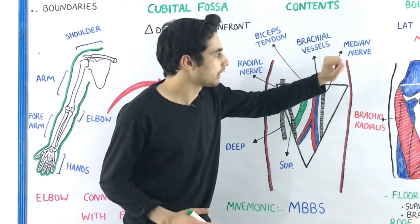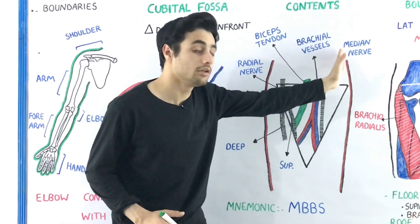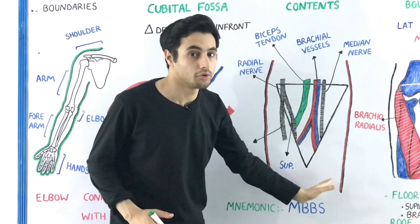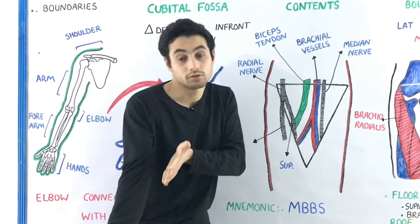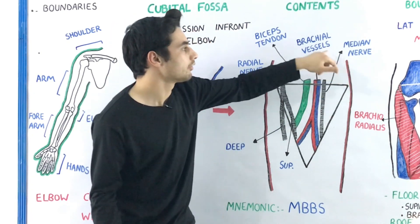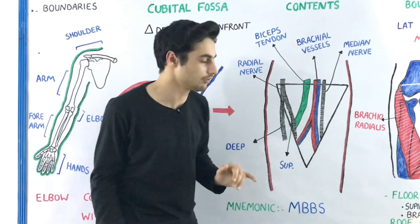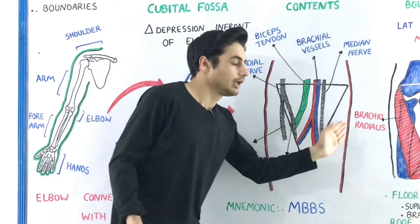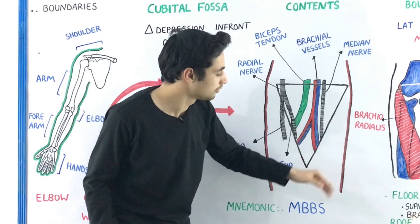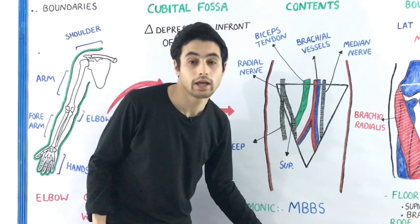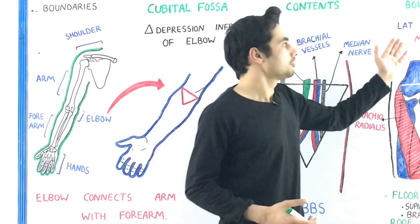The median nerve is on the medial side of your elbow joint. Looking from medial to lateral, you have the median nerve, the brachial vessels, the biceps tendon, and the radial nerve on the lateral side. You can remember this arrangement with the mnemonic MBBS.